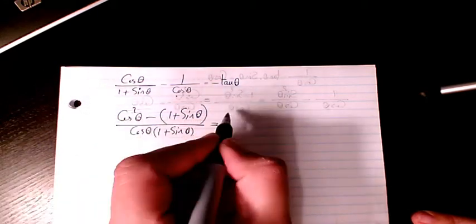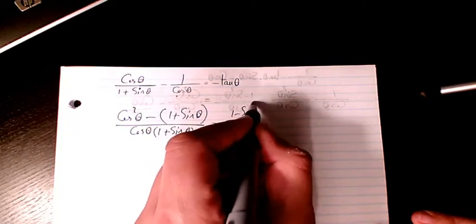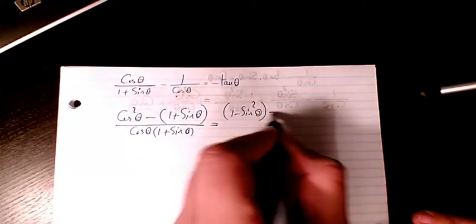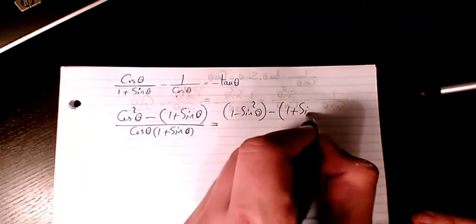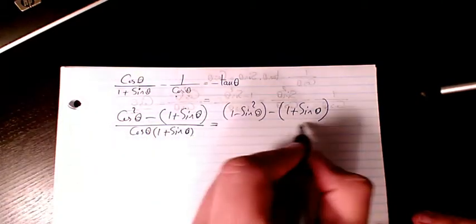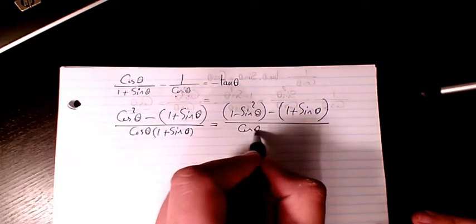I'll write cosine squared as 1 minus sine squared theta minus 1 plus sine theta, all over cosine theta times 1 plus sine theta.